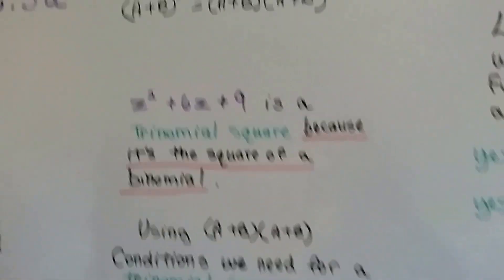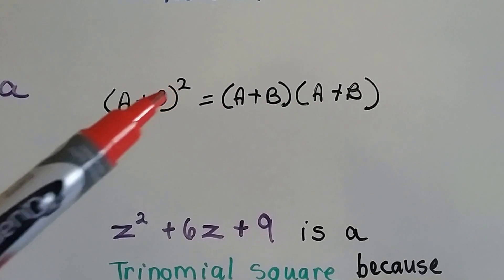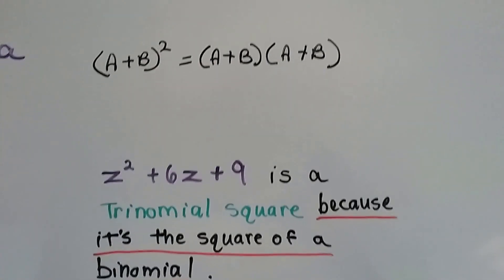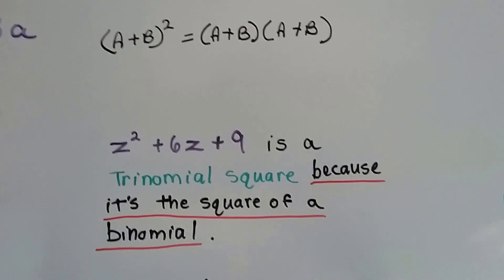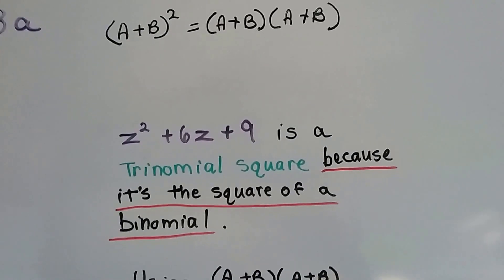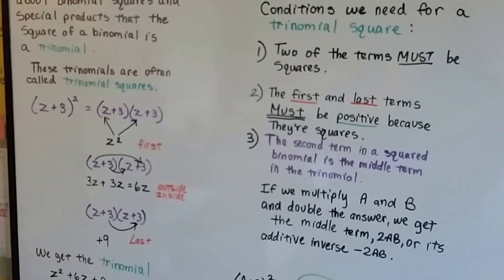So if we follow this formula, (a+b) squared to get (a+b)(a+b), we can use this. z squared plus 6z plus 9 was our trinomial.